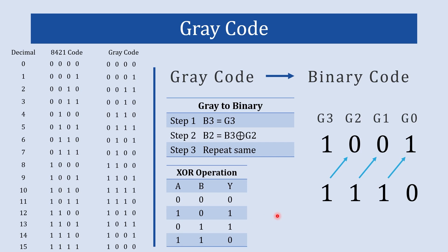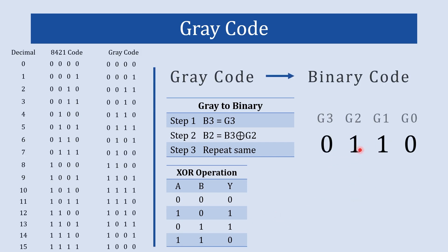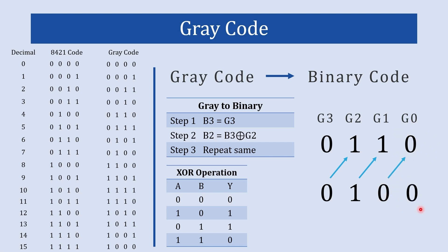To better understand this let us take one more example with gray code arranged as g3 g2 g1 g0. As per step number 1, b3 of binary code is the same as g3 of gray code, so we write 0 as it is. In the next step, b3 XOR g2 — both are different, so we write 1. Then b2 XOR g1: 1 XOR 1 gives 0. Then b1 XOR g0: 0 XOR 0 gives 0. So 0100 is the binary equivalent to this gray code.